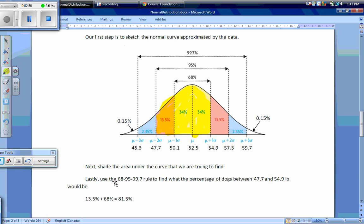We have to use the 68-95-99.7 rule, which says that 68% of our data is within 1 standard deviation of the mean, 95% is within 2 standard deviations, and 99.7% is within 3 standard deviations. Between 47.7 and 54.9 pounds, we have 13.5% plus 34% plus 34%, which equals 81.5% of dogs.